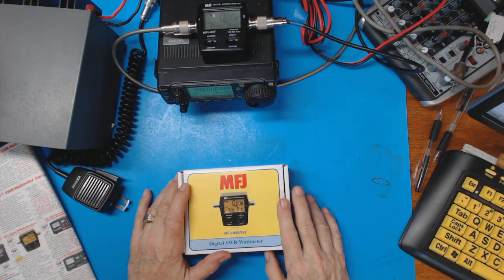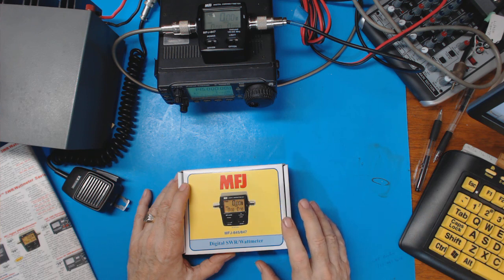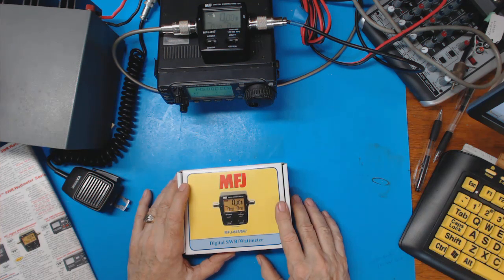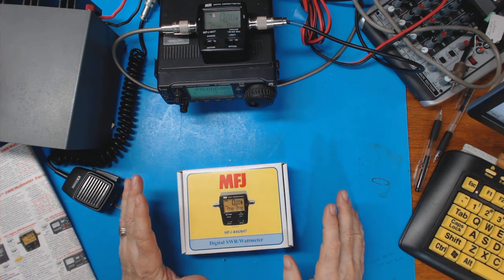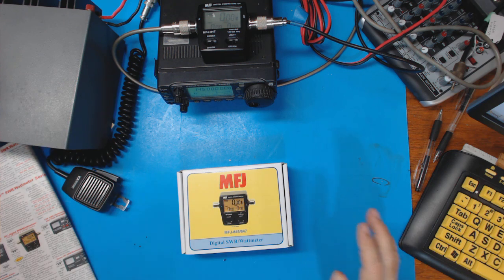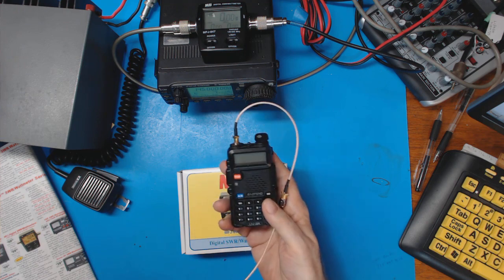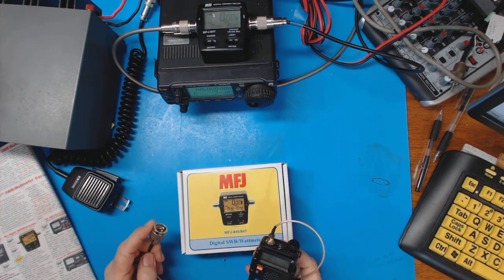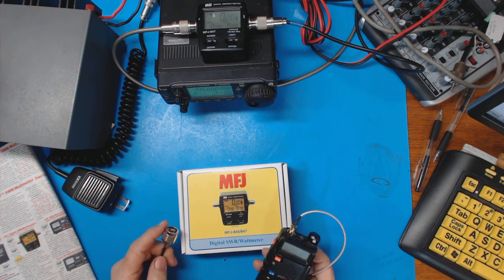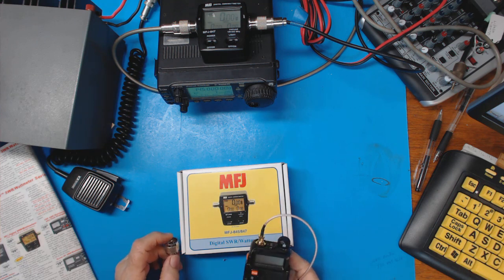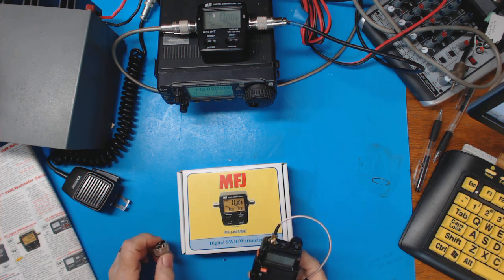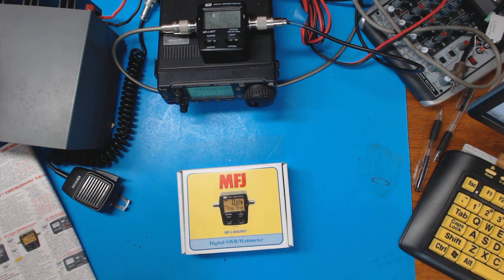What we're going to look at this morning is this MFJ Digital SWR slash wattmeter. Now, I thought I was going to have a very simple setup, and what I was going to do is I was going to use one of my little Bofang radios and hook it to the wattmeter and do a simple test.